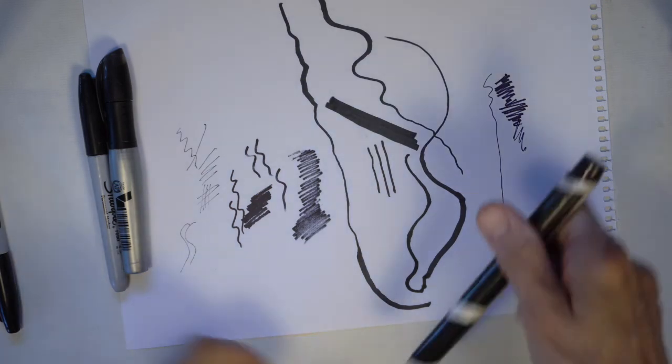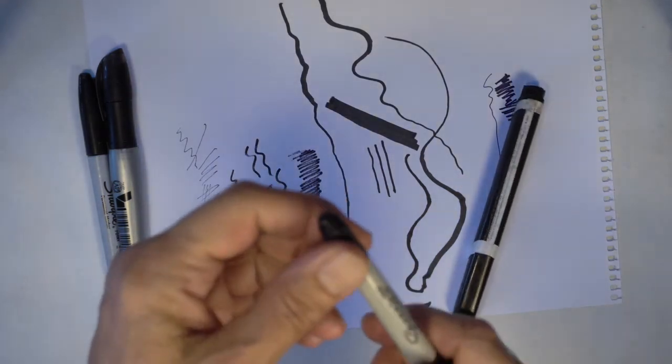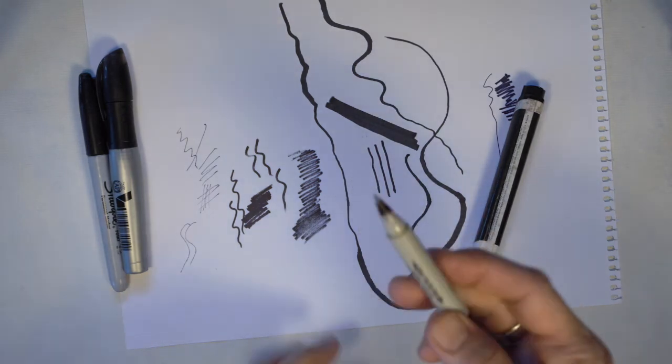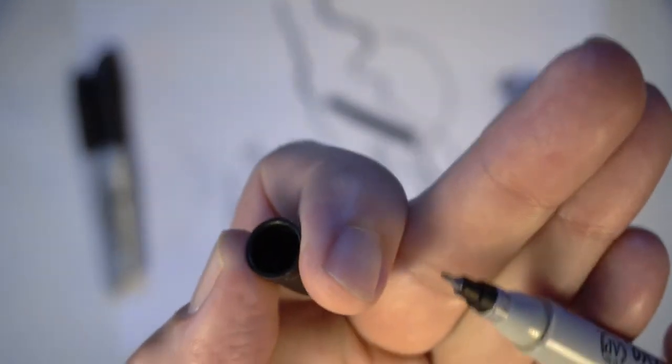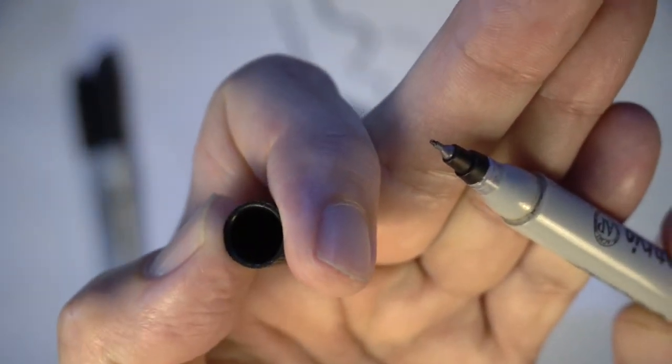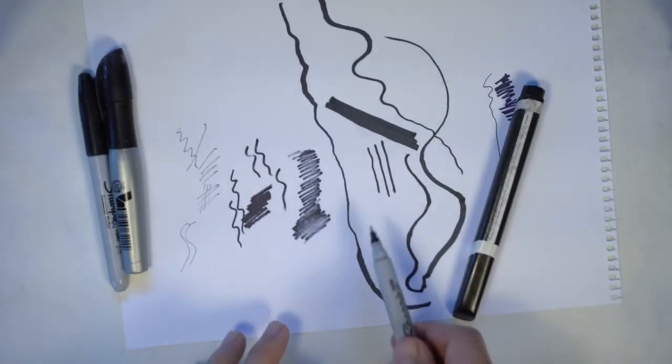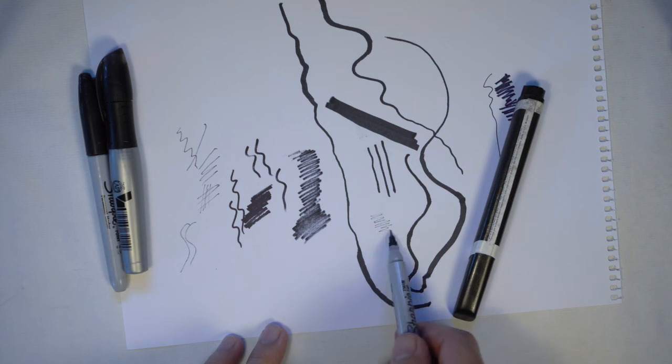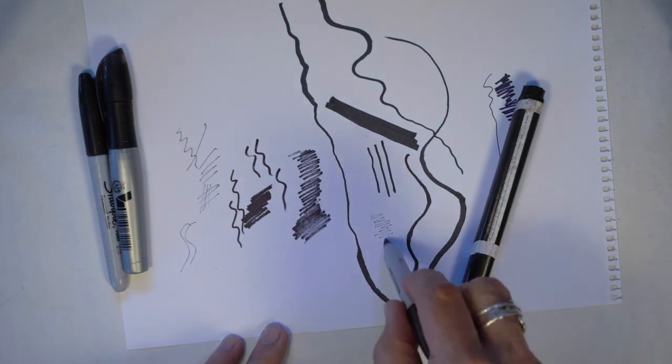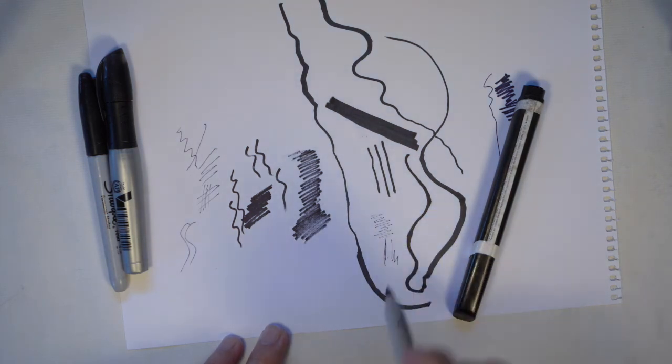The most limited one is the first one I showed you with the ultra fine point tip, because with this one, the very end of the nib is so tiny that you can't do shading with it. It doesn't really change its style of mark making.